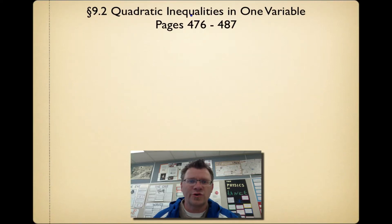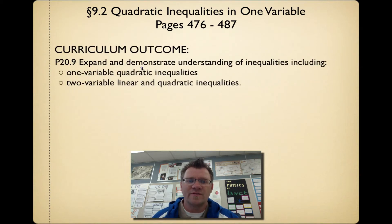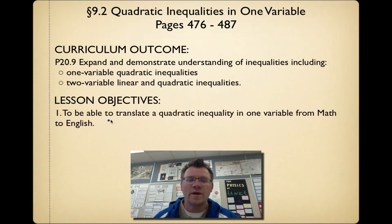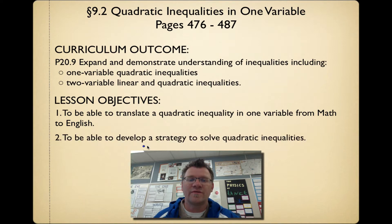Section 9.2 is quadratic inequalities in one variable, on pages 476 to 477 in your text. The curriculum outcome is to expand and demonstrate understanding of inequalities, including one-variable quadratic inequalities and two-variable linear and quadratic inequalities. Our lesson objectives are: number one, to be able to translate a quadratic inequality in one variable from math to English, and number two, to be able to develop a strategy to solve quadratic inequalities.